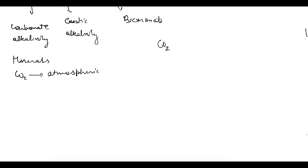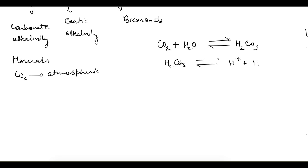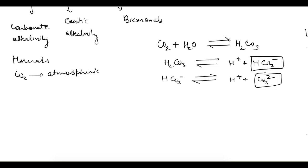First, carbon dioxide added to water gives a reversible reaction forming carbonic acid (H₂CO₃). This then breaks into H⁺ and bicarbonate ion (HCO₃⁻). This HCO₃⁻ further breaks into H⁺ and carbonate ion (CO₃²⁻) — that is your carbonate alkalinity. The previous step is your bicarbonate alkalinity.